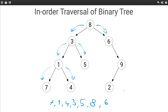Then we visit the right subtree. First we visit the left subtree — there is no left subtree here — so we print 2, then the right subtree, there is no right subtree. Then once we are done with the left subtree, we print the current node and then go to the right subtree. Since there is no right subtree, we are done — we are done with the right subtree.